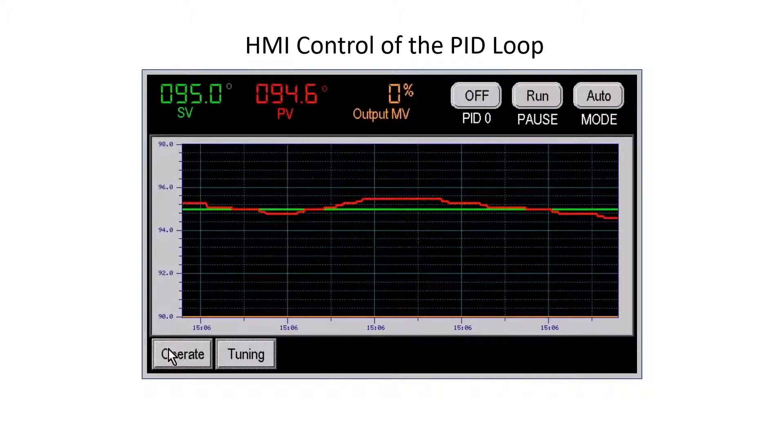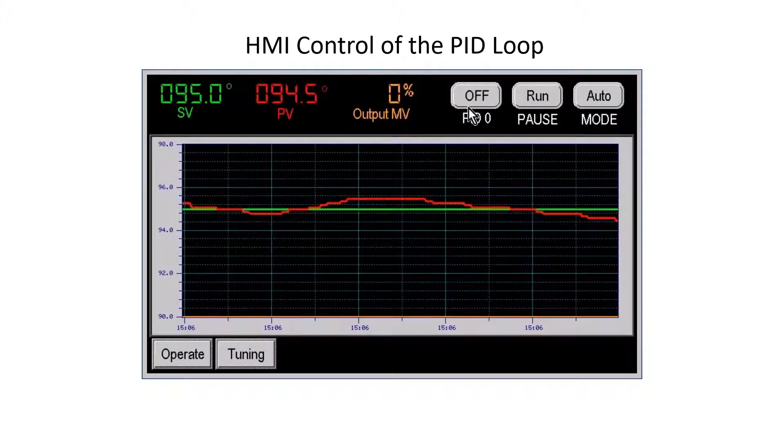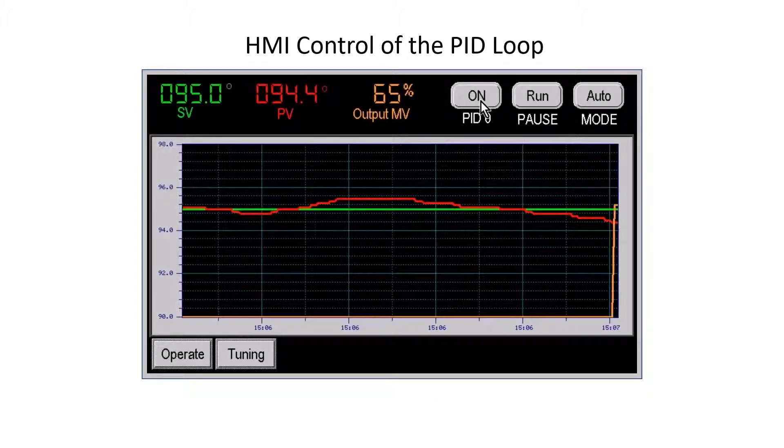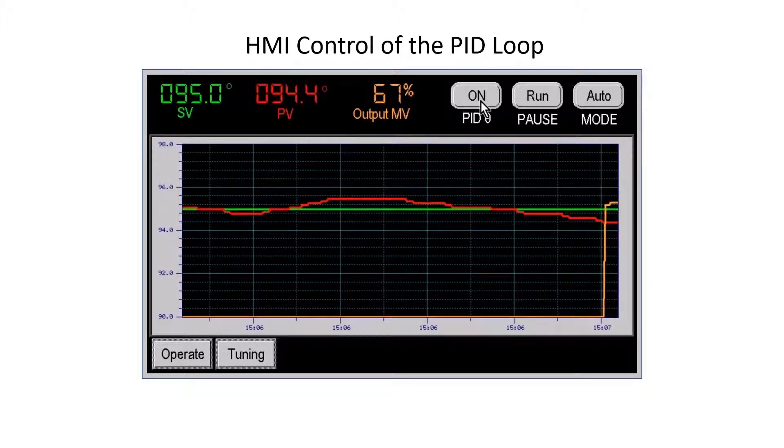The PID loop will be in the off mode after auto-tuning. From the operate screen, turn the PID loop on. The PID loop will begin to run.